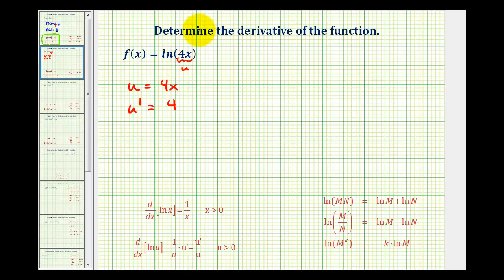So now we can rewrite this function as natural log u, and then apply our derivative formula, which includes the chain rule. So f prime of x is going to be equal to the derivative of natural log u with respect to x, which is 1 over u times u prime, which would be 1 over 4x times 4, or 4 over 1. Notice how these 4's simplify out, and we have f prime of x is equal to 1 divided by x.